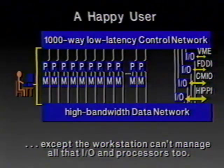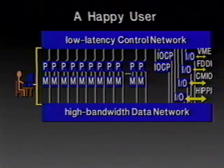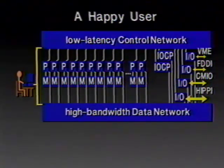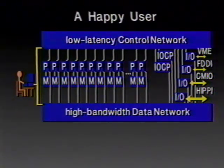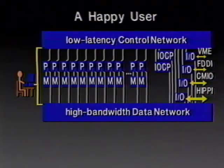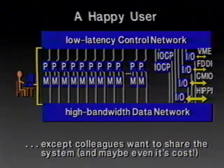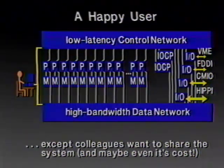So we'll correct for this by putting some more control processors in the system so the workstation doesn't have to be the only one in charge. We'll add some I/O control processors into the system — these can be in charge of managing the I/O devices while this workstation manages the computing going on. That works out to be a reasonably balanced system. And now the user is very happy, but the user's colleagues aren't happy. The colleagues want to share in this wonderful big system, and maybe share in the cost too.